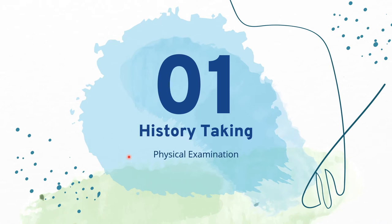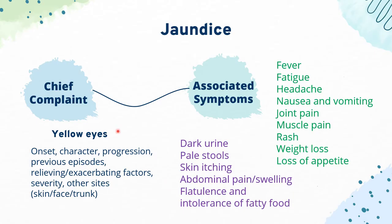Let's start with history taking for a patient who comes in with yellow eyes. First, we have to look at the chief complaint, which is yellow eyes. Explore its onset, character, progression, any previous episodes, relieving and exacerbating factors, its severity, and whether there is any yellowish discoloration at other sites of the body, such as skin, face, and trunk.